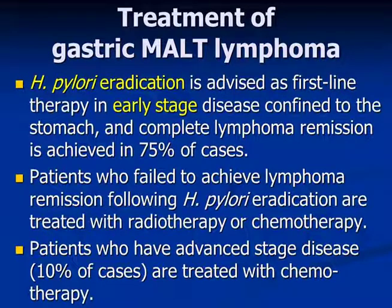Regarding the treatment of gastric MALT lymphoma, H. pylori eradication is advised as first-line therapy in early stage disease confined to the stomach, and complete lymphoma remission is achieved in 75% of cases. Patients who fail to achieve lymphoma remission following H. pylori eradication are treated with radiotherapy or chemotherapy. Patients who have advanced stage disease, about 10% of cases, are treated with chemotherapy.